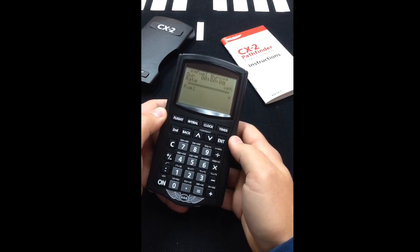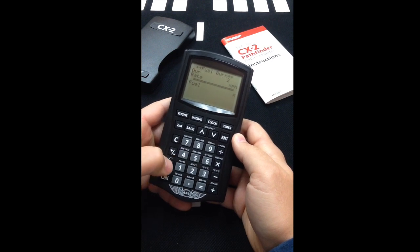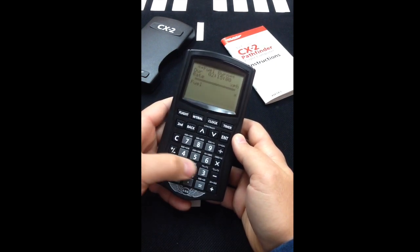The first field is asking for our duration. As an example, let's use 2 hours, 15 minutes, and 30 seconds. Start off by entering 2, colon, 15, colon, 30,